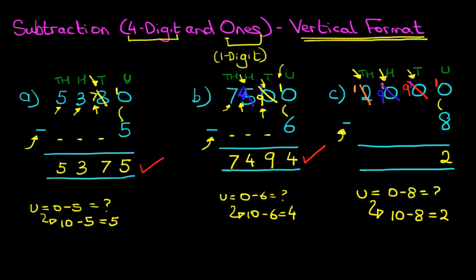So the hard work has been done — now it's a very simple part. The units column is no longer 0 minus 8; it is 10 minus 8. 10 minus 8 is 2. Now the tens column: we've got 9 tens, 9 minus 0 is 9. How about the hundreds column? We've got 9 hundreds, 9 minus 0 is 9. And lastly, the thousands column: we've got 1,000, 1,000 minus 0 is 1. And there we have it — 2,000 minus 8 equals 1,992.